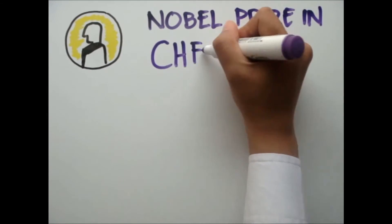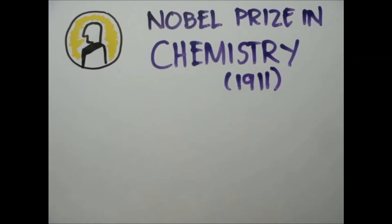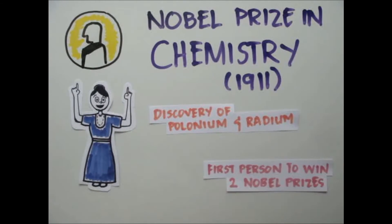By 1911, Marie won a Nobel Prize in Chemistry for her discovery of polonium and radium, becoming the first person to win two Nobel Prizes.